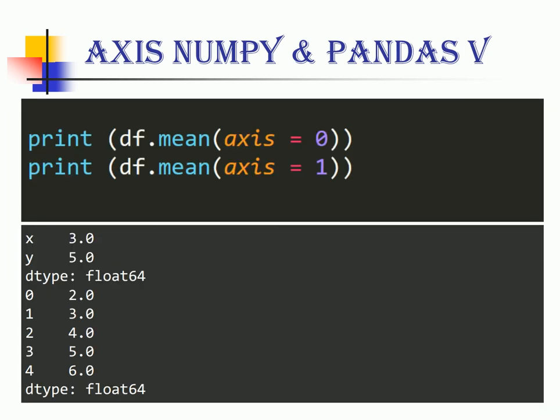For the first objective, that is my column wise mean, I make use of axis equal to zero which gives me the mean of the first column which is one, two, three, four, five, and the mean turns out to be three for the first column. Similarly the mean turns out to be five for the second column.